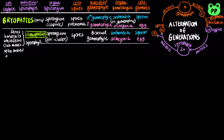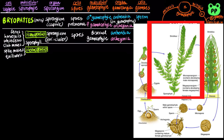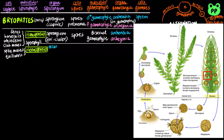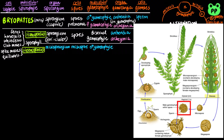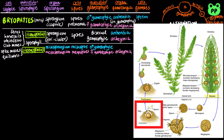Some seedless vascular plants are heterosporous, such as spike mosses and quillworts from lycophytes. In the life cycle of a spike moss, a mature sporophyte contains two types of sporangia. The microsporangium produces microspores through meiosis, which develops into a male gametophyte that produces sperm through mitosis. The mature sporophyte also contains the megasporangium, which produces megaspores through meiosis.